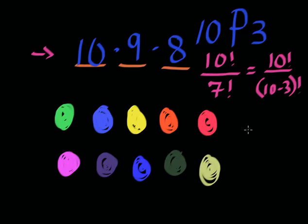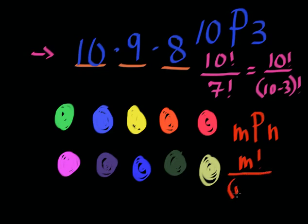And that brings us to a formula that can get you the answer to any permutation problem in this form. If we want to find m permutations of n, then we can represent it as m factorial divided by m minus n factorial. Very simple.